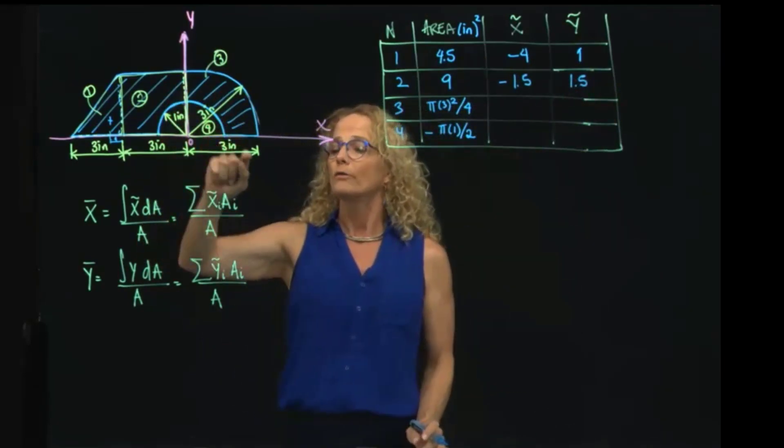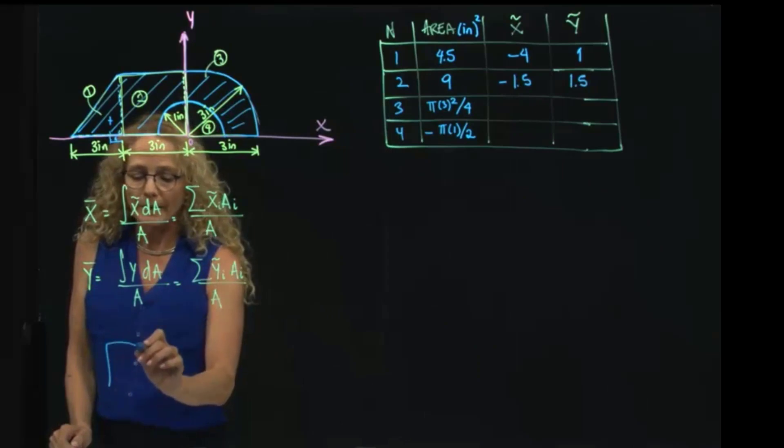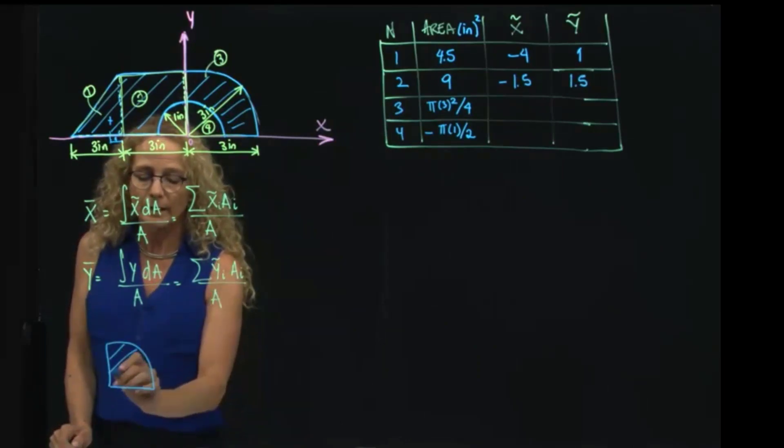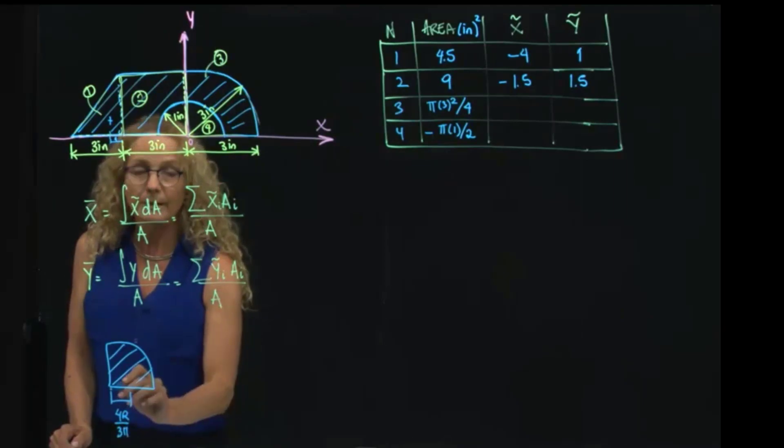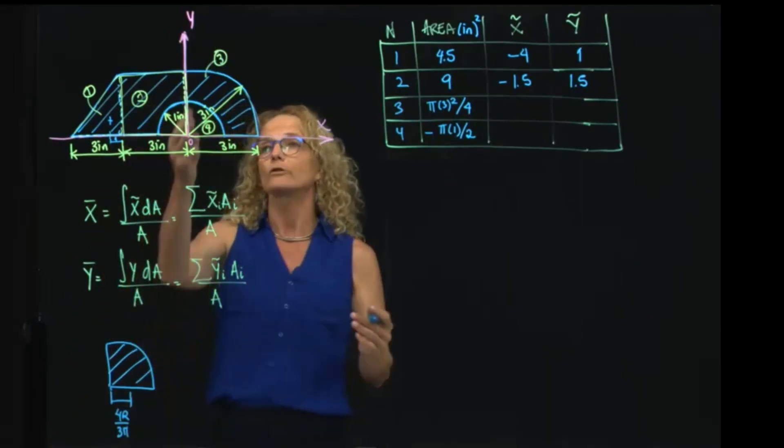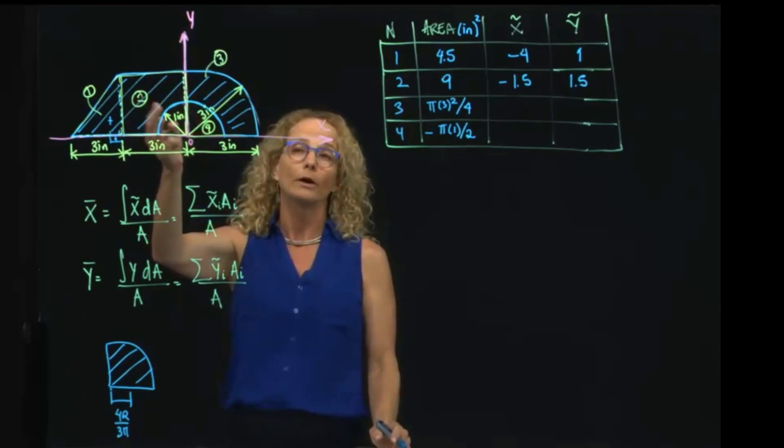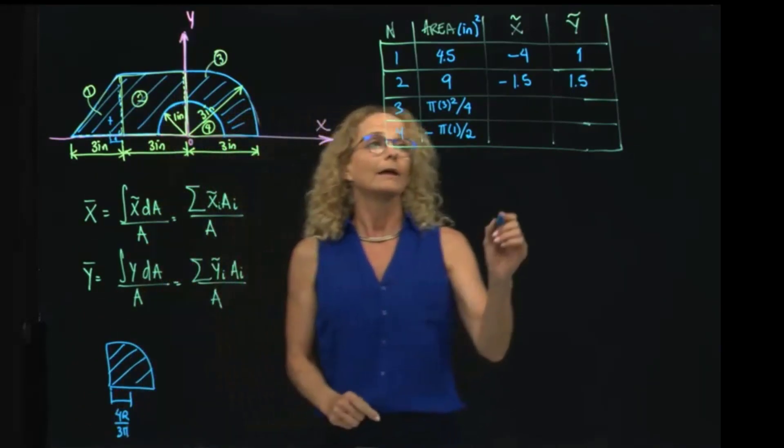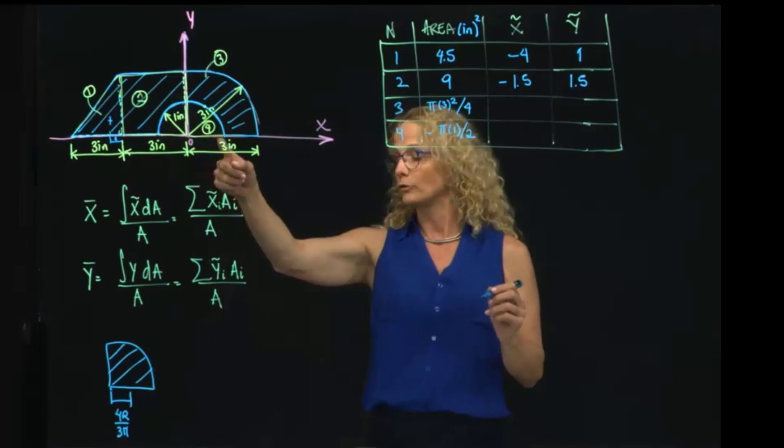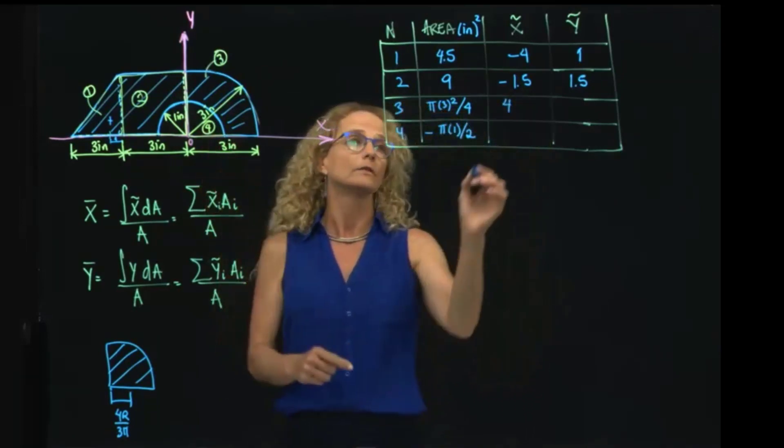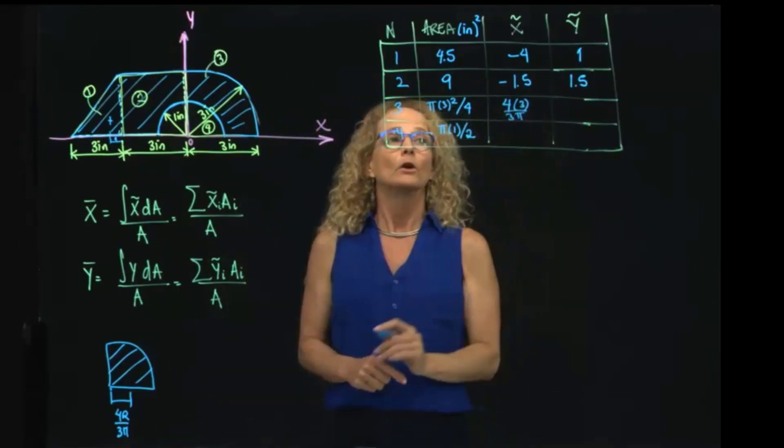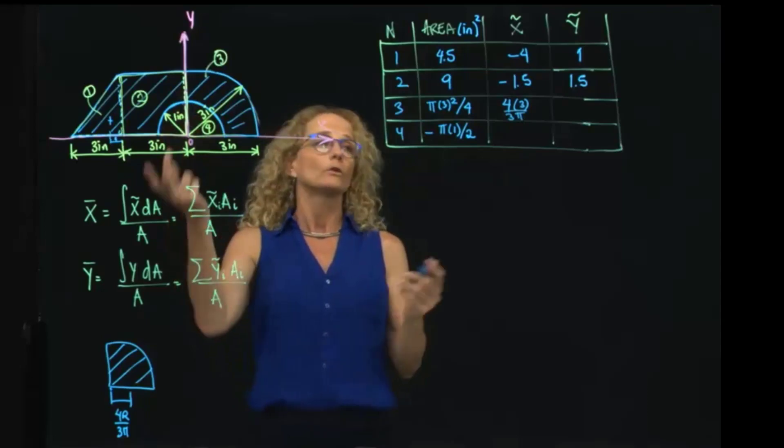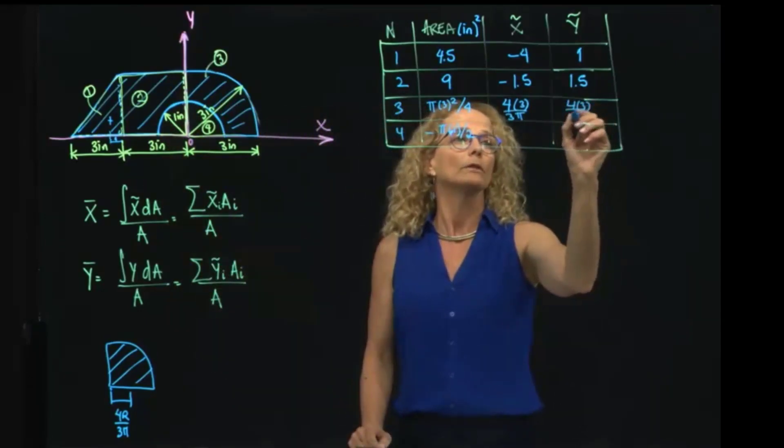In the case of a plate, we have to recall from the tables that the centroid of a plate is located at 4r over 3π from here. And this is also attached to my coordinate system, so I don't have to add any, but I have to put this value. So that will be equals to 4, and the radius is 3 over 3π. And the y is located in the same position: 4 times 3 over 3π.